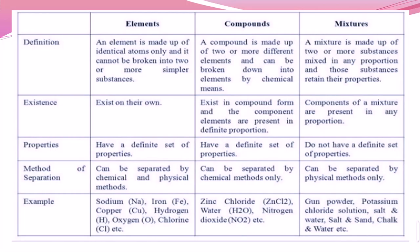Elements exist on their own and retain their identity independently. In compounds, the component elements are present in definite proportions. In mixtures, components are present in any proportion with no fixed mass ratio, since they are physically — not chemically — attached. Elements and compounds each have a definite set of properties, but mixtures have no definite set of properties.